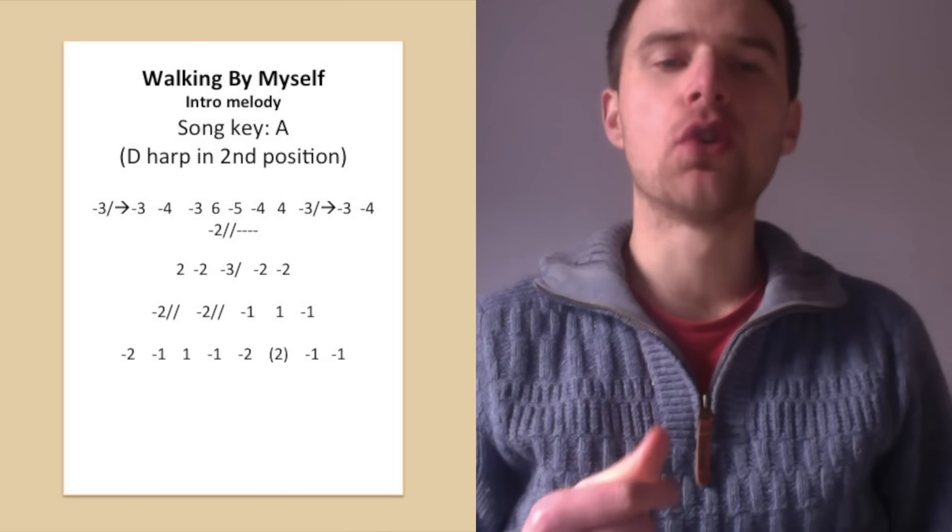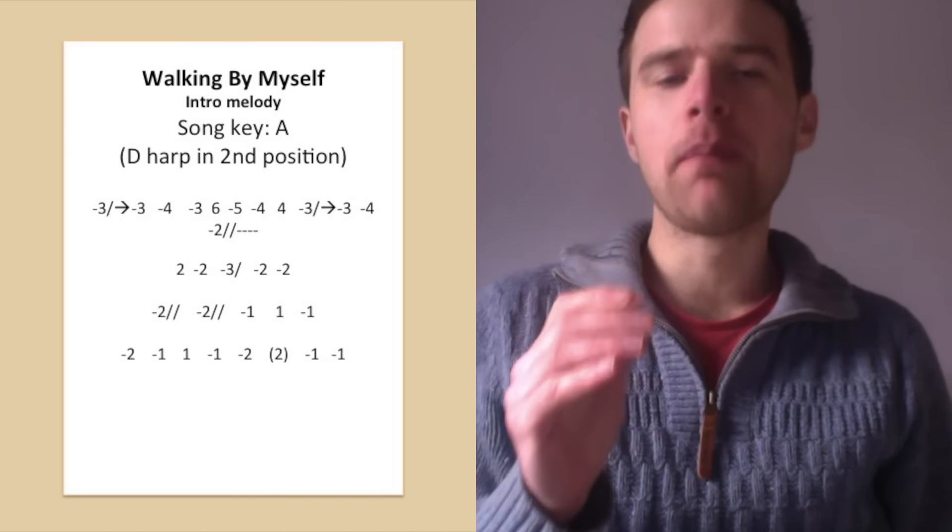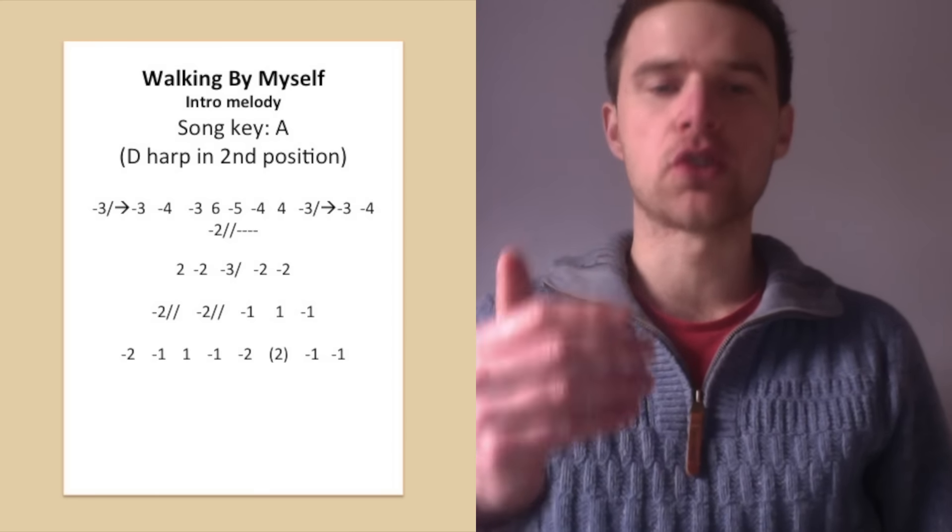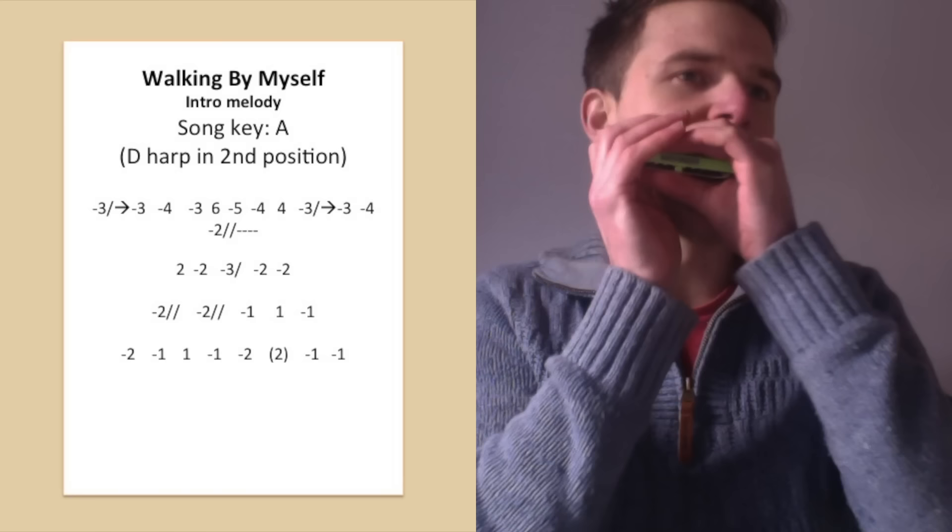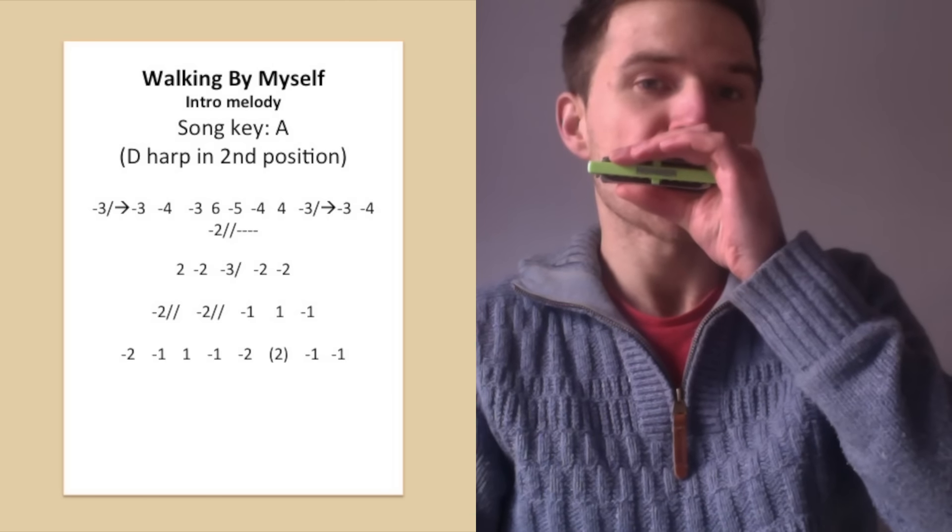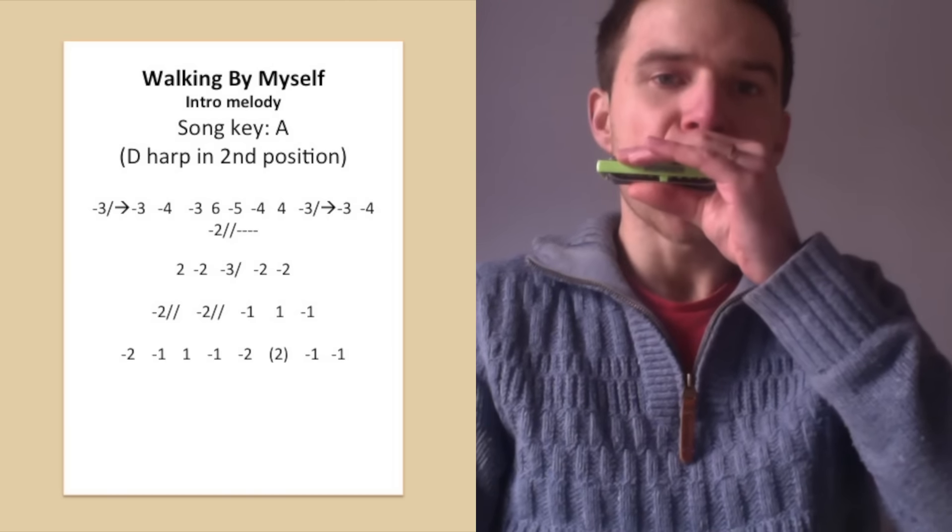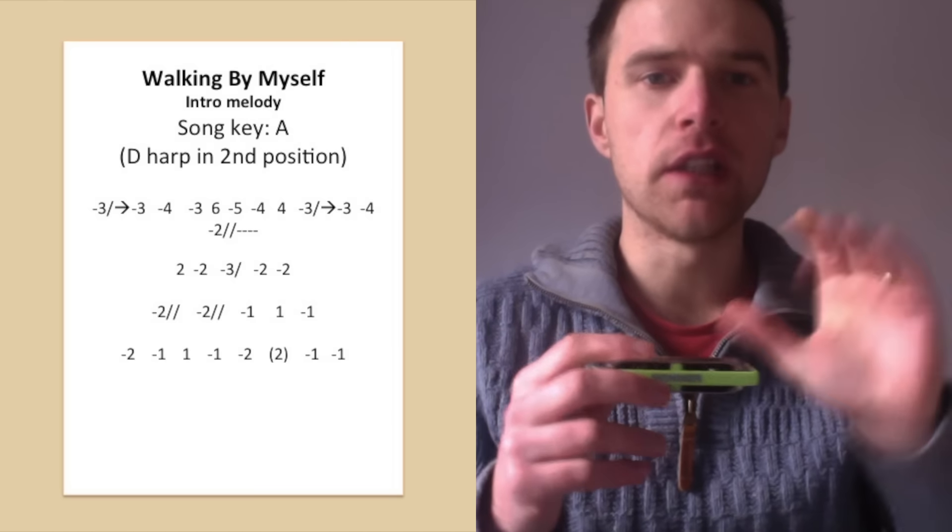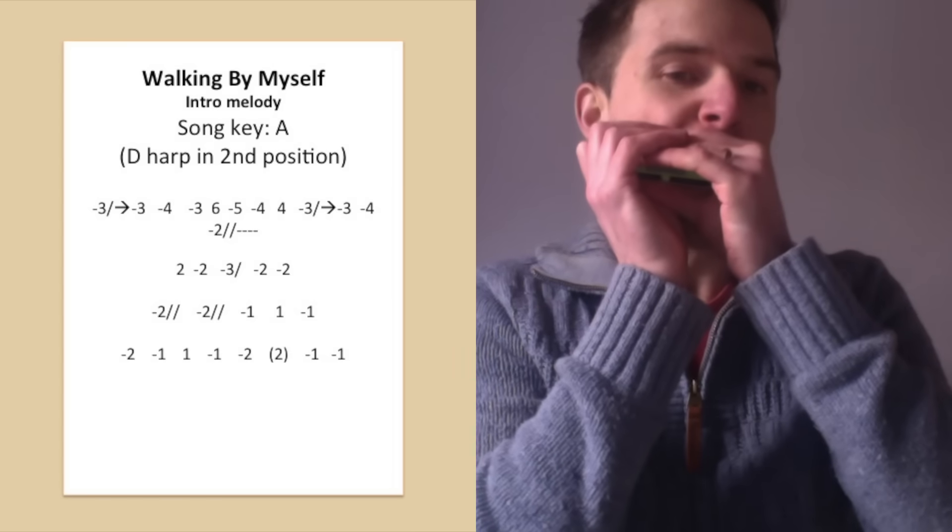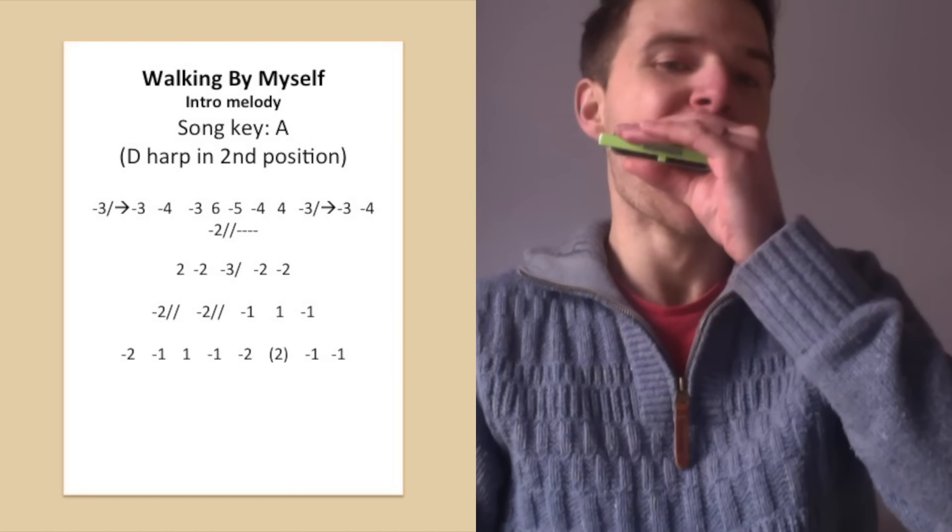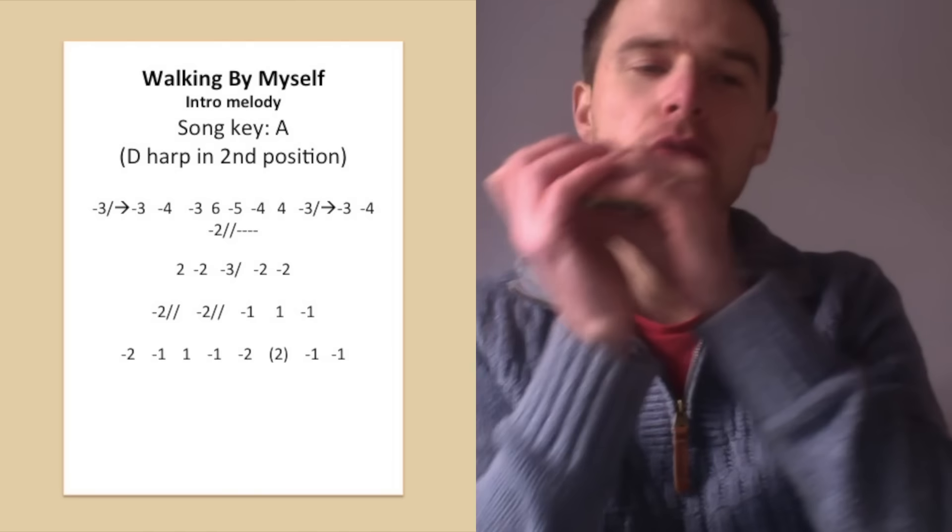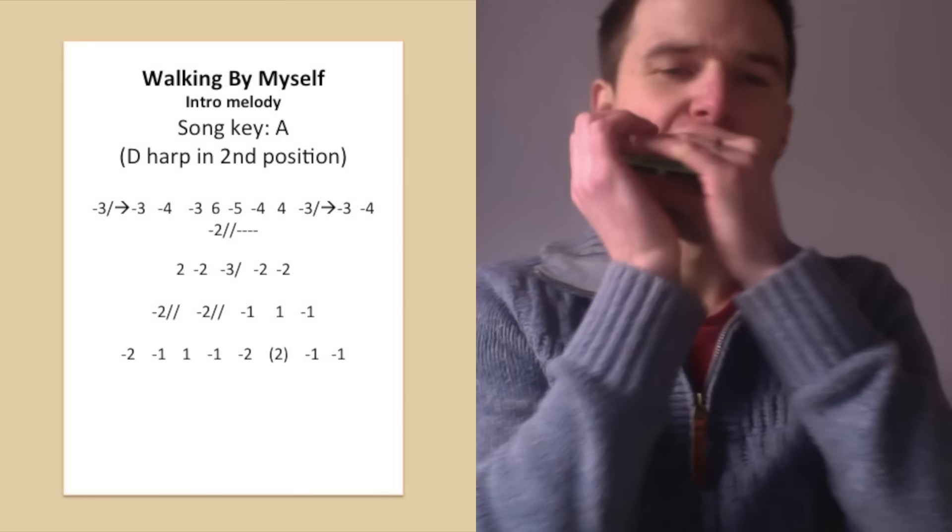Okay, so we've got a three draw at the beginning, but it starts with a little bend that releases what I would call a scoop bend, where you start on a bit of a bend on three and release it. So we've got that on the three draw and then it goes to the four draw straight away. And that's the walking. If we were singing it, that's how the melody would go.